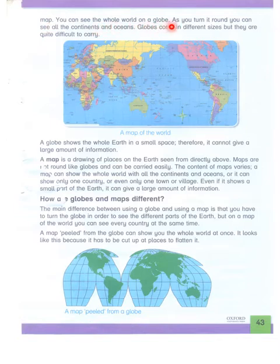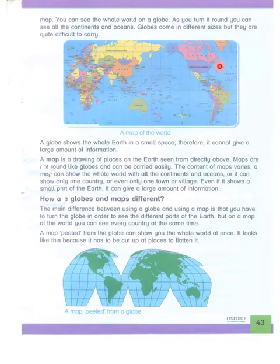You can see the whole world on a globe as you turn it around — you can see all the continents and oceans. Globes come in different sizes but they are quite difficult to carry. Globe को आप समझें कि globe की तस्वीर लेकर इसको state किया गया है। Globes जो होते हैं मुختलिف sizes में आते हैं मगर इनको उठाके फिरना बड़ा मुश्किल होता है।